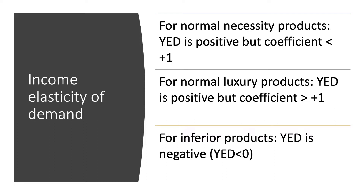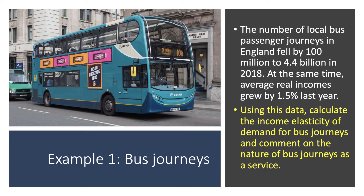We use the data on the coefficient of income elasticity to identify different types of products. For a normal necessity, the income elasticity is positive — greater than zero — but the coefficient will be less than plus one. For normal luxury products, income elasticity of demand is positive and the coefficient is greater than plus one, as people are very sensitive to their income levels.